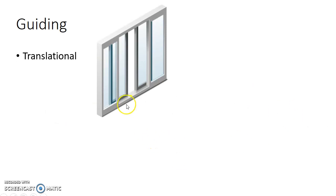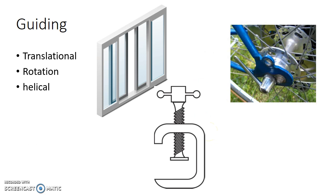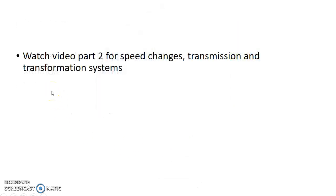Finally, guiding controls: translational movement — the tracks of a window allow back-and-forth translational movement. Rotational movement — found in a bicycle or car tires, where the middle part allows the rotational movement of the tire. Helical — this piece has ridges that allow the top part to move down in rotation and translation at the same time, which is why it is called helical. Watch part two for speed changes, transmission, and transformation systems.